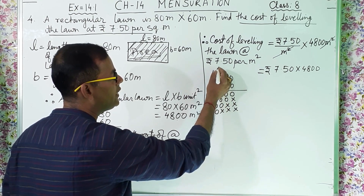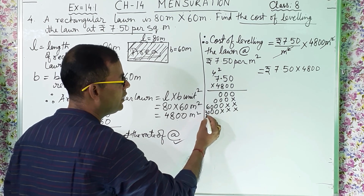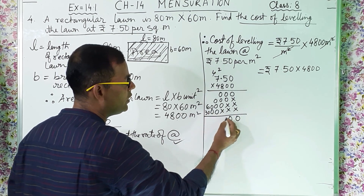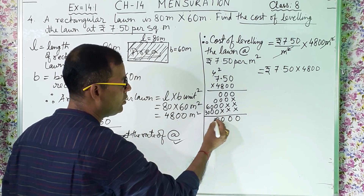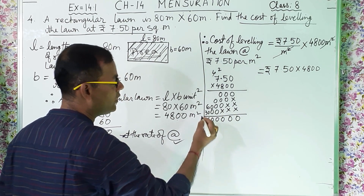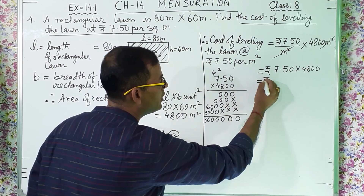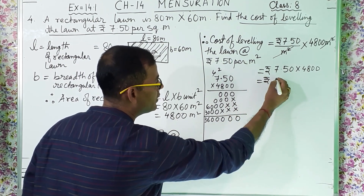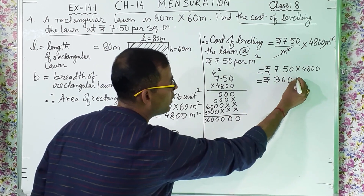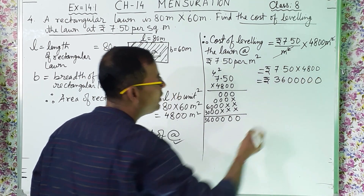Multiplying 7.50 into 4800: working through the steps we get the product. Adding the partial products together gives us 360000. Since there are 2 digits after the decimal point in 7.50, we place the decimal point 2 places from the right, giving us 36000.00.